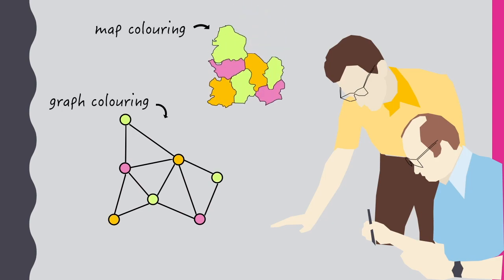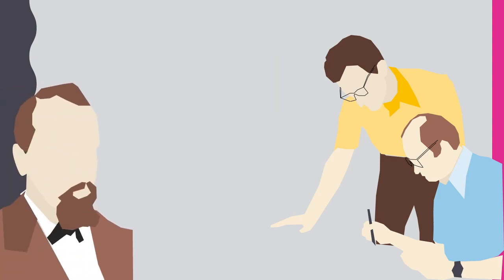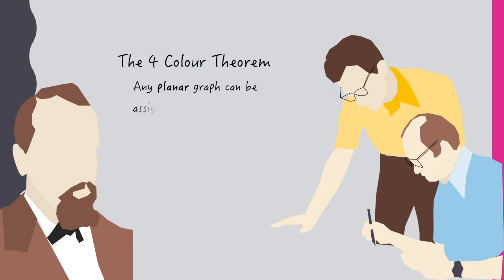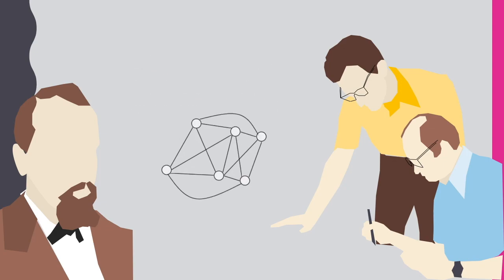This four colour theorem also has another important provision: the graph needs to be planar. A planar graph is one which can be drawn such that none of the edges cross over one another. Note that we say 'can be drawn' because the position of arcs and vertices isn't so important.